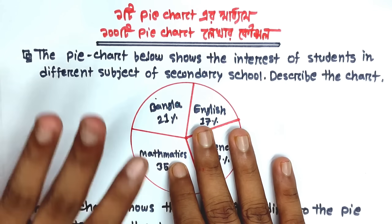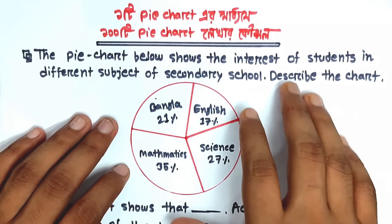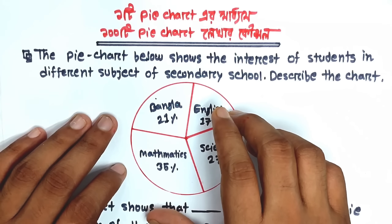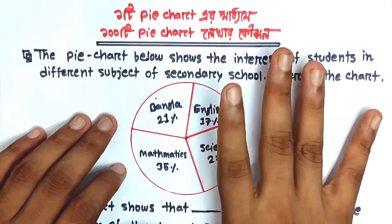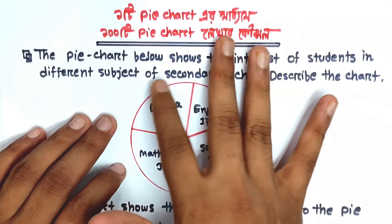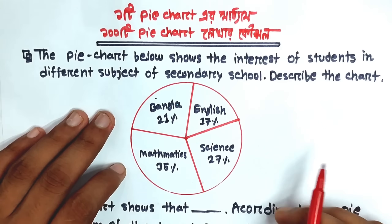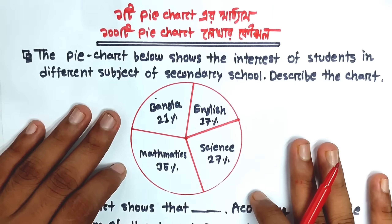Okay, so now — pay attention here. I am going to pull up a pie chart. Look, look carefully right here. Here, what is written — read it a little carefully.